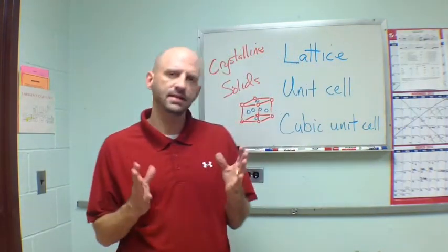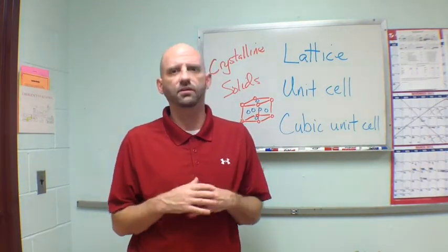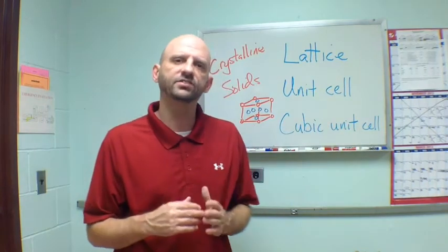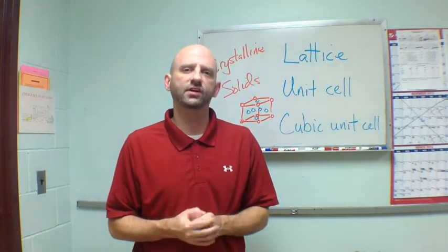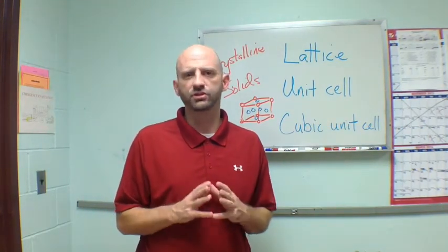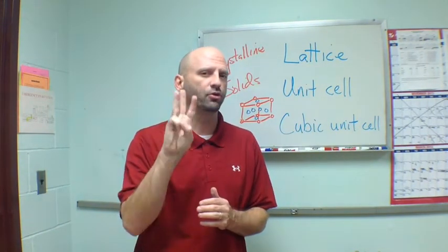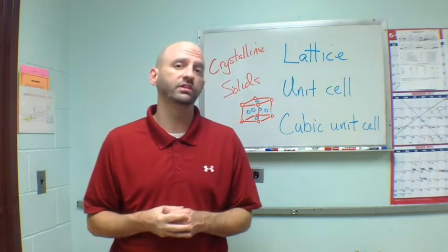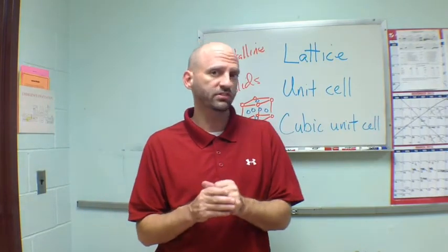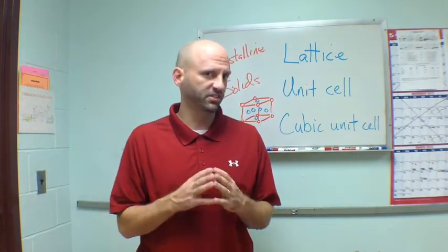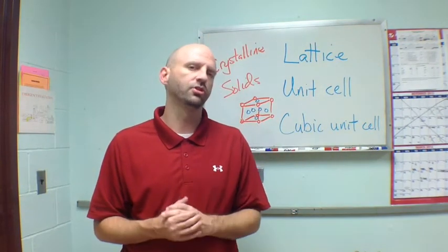There are about 14 different types of unit cells out there. They're shaped in hexagonal ways, in ways that are cubic, or slanted in something called a tetragonal unit cell. The particular names of the unit cells won't be our concern, but what we're going to want to know are the cubic unit cells. There are three types: simple cubic, body-centered cubic, and face-centered cubic unit cells.